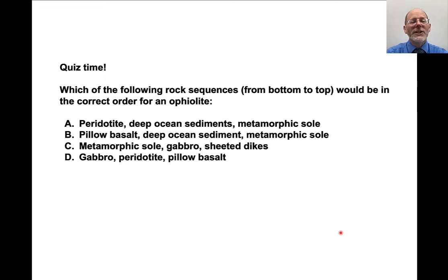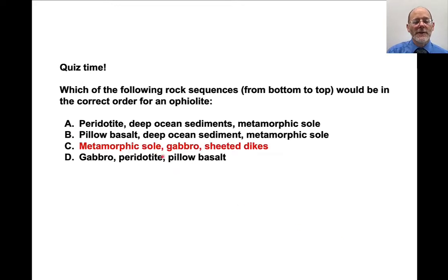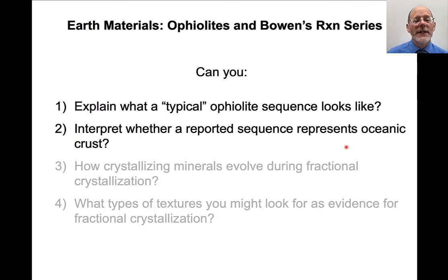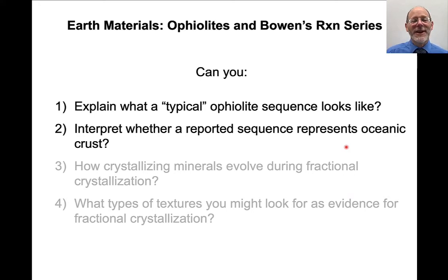Quick question: which of the following rock sequences would be in the correct order for an ophiolite, bottom to top? The answer is: metamorphic sole, then ultramafic rocks, then gabbro, then sheeted dikes, then pillow basalts, and then oceanic sediments. At this point, I hope you have a sense of what a typical ophiolite sequence looks like and can interpret whether a reported sequence is consistent with what we would expect for oceanic crust.